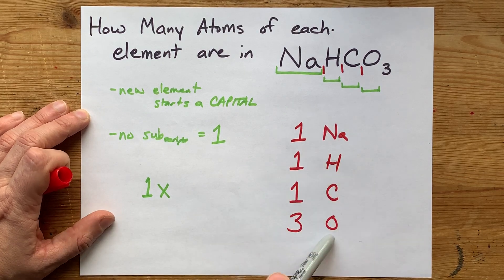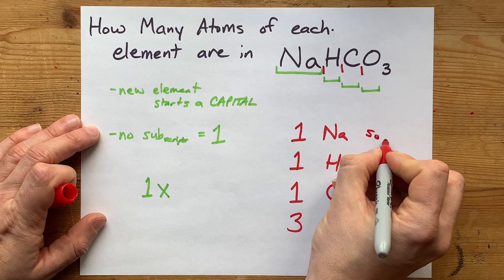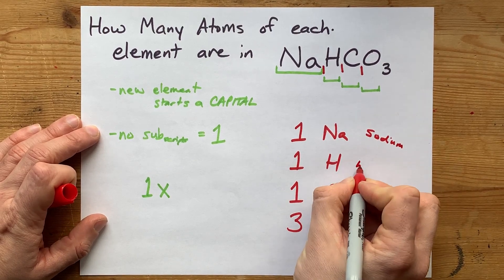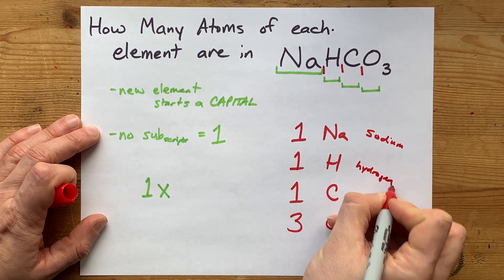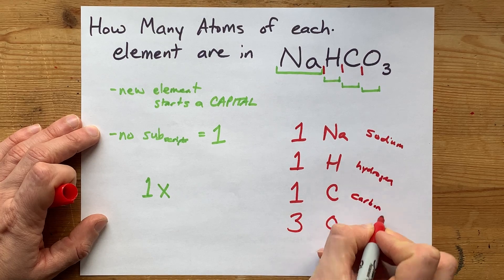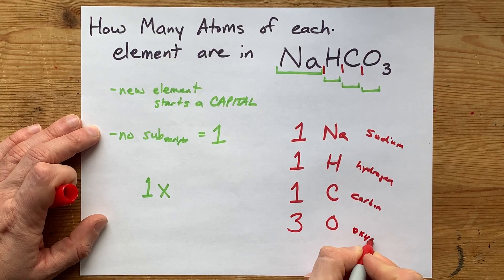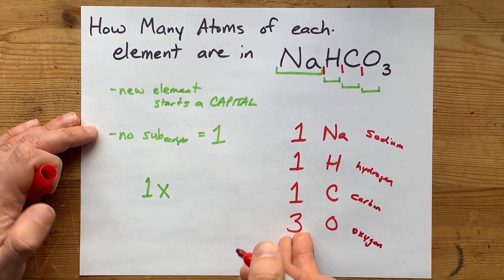You can convert these to the names. If you have a periodic table with you, you can say there's 1 sodium, 1 hydrogen, 1 carbon, and 3 oxygens, which is 6 atoms total.